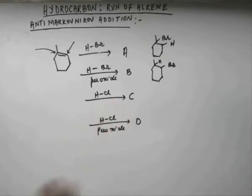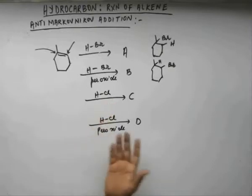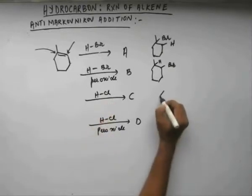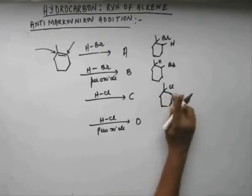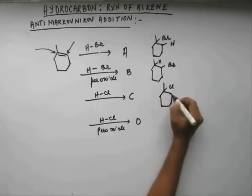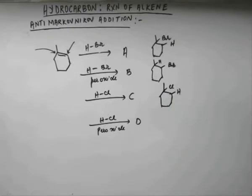In case of HCl, we are not adding peroxide. There is no question of any peroxide effect. We will do the addition of HCl as we did. And chlorine will get attached to more substituted carbon or more hindered carbon. And hydrogen will get attached to less substituted carbon.